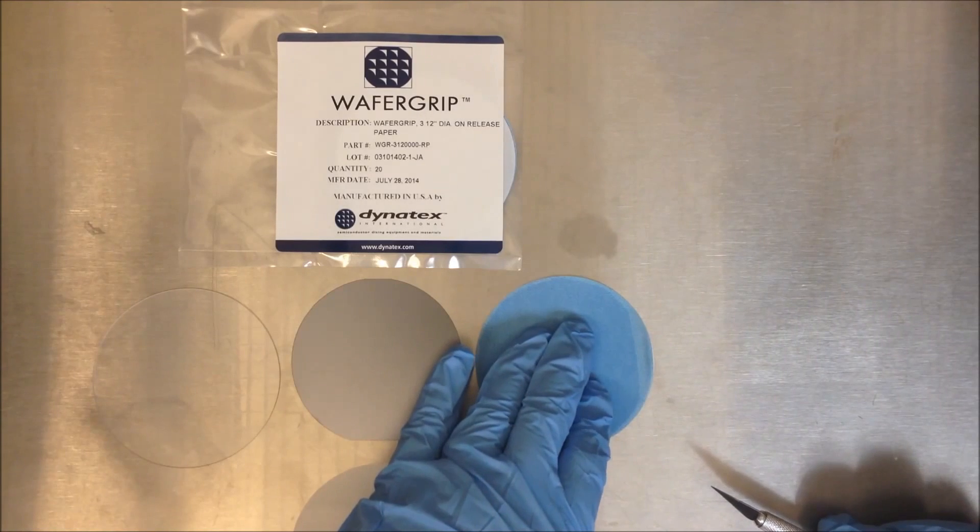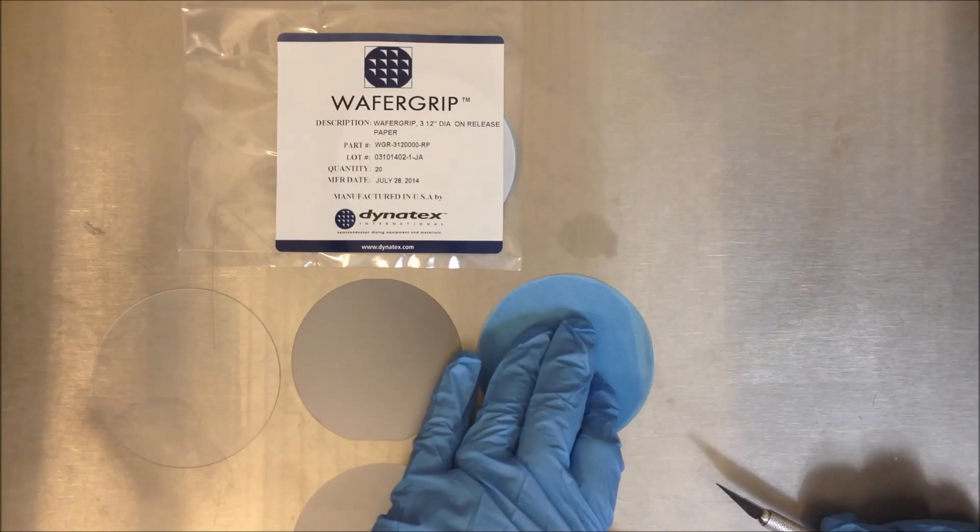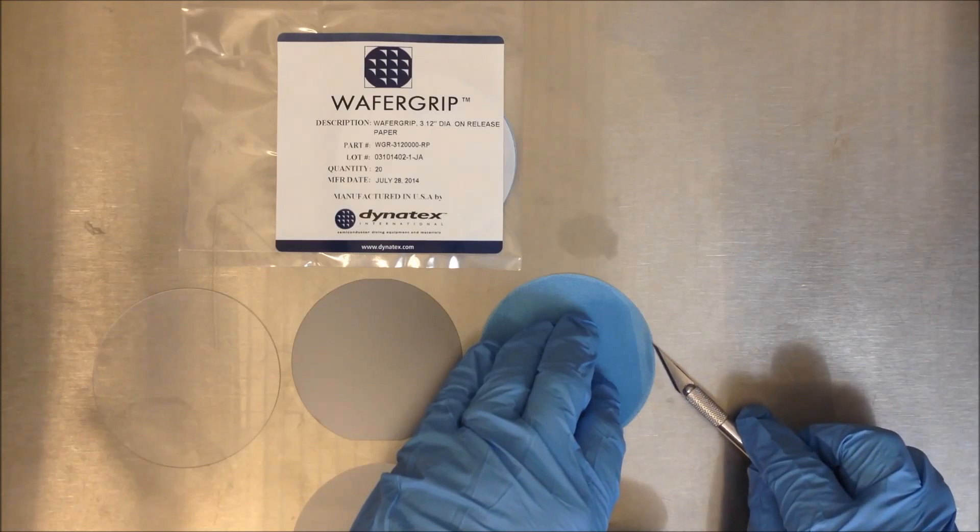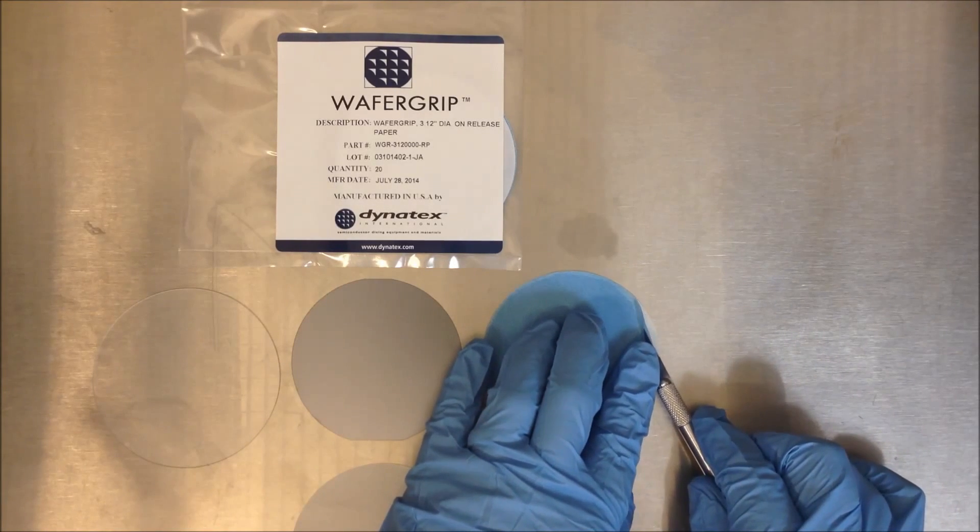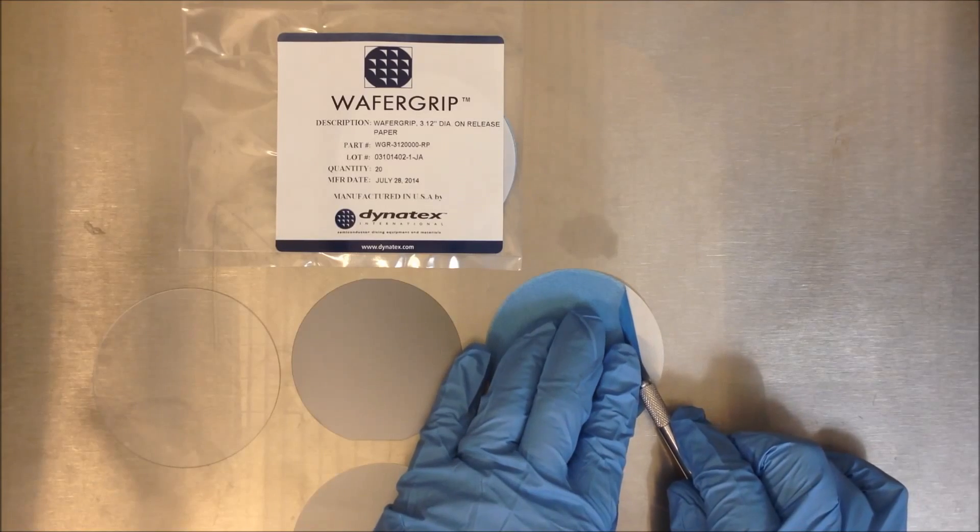Now that's not enough for a reliable peel so I use the scalpel between the paper and the wafer grip and my finger to ease it back a little more.